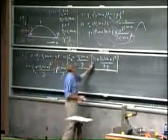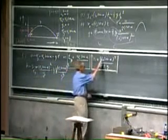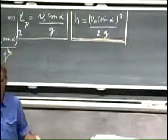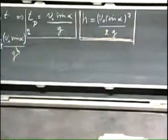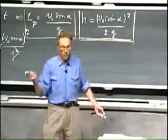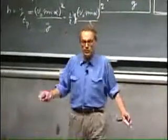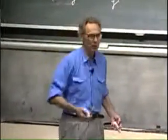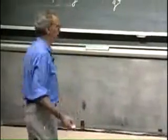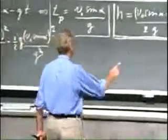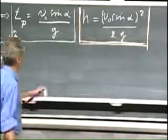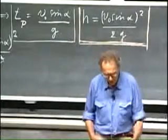Is this reasonable? The height gets larger when v₀ is higher—of course, if you shoot it up at a higher speed it goes higher. If you increase alpha toward 90 degrees, it goes higher too; the maximum is when alpha equals 90 degrees. And if you did the experiment on the moon, it would go much higher, so g being in the denominator makes complete sense.